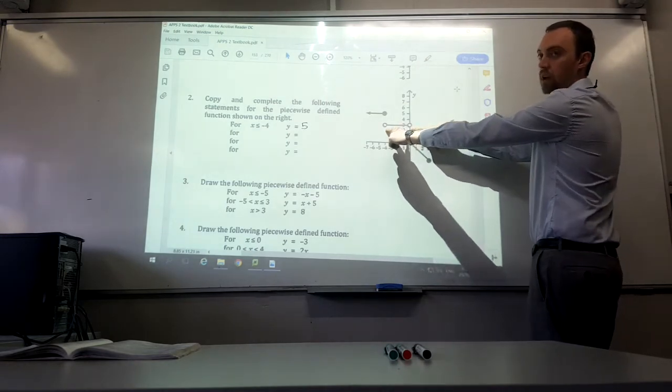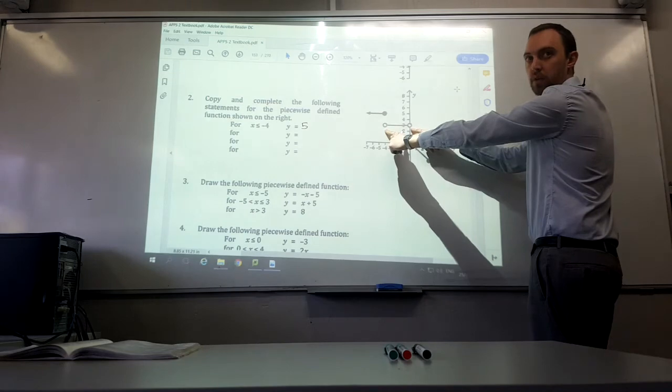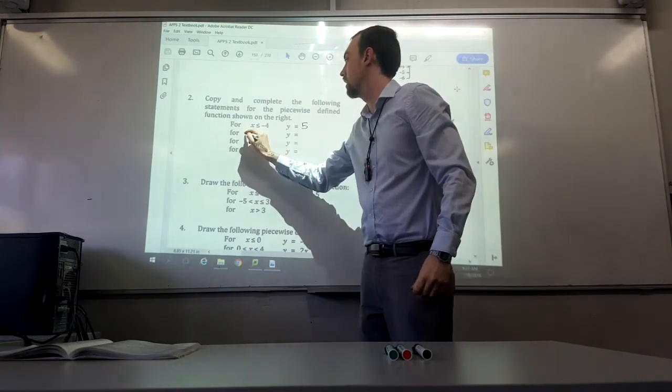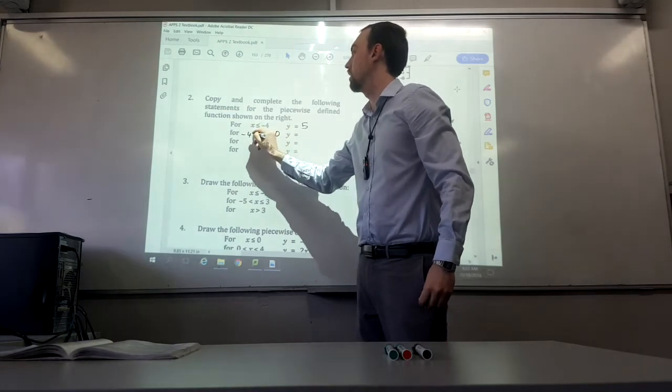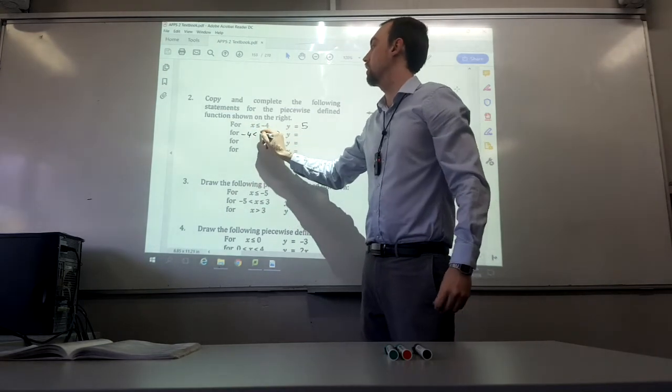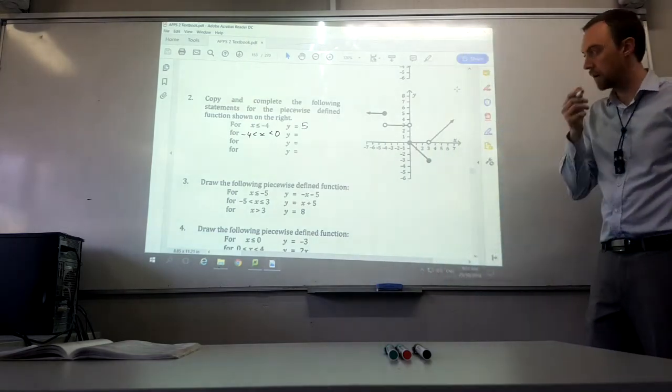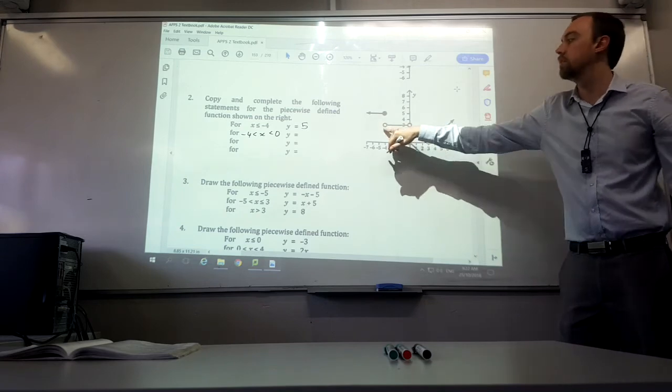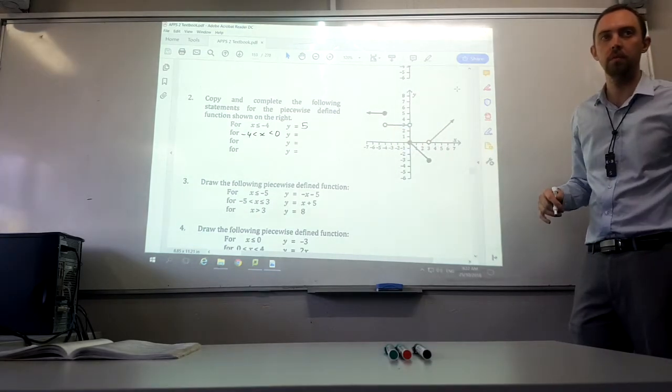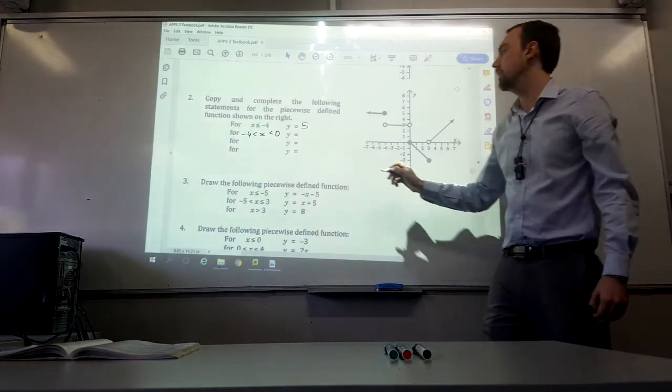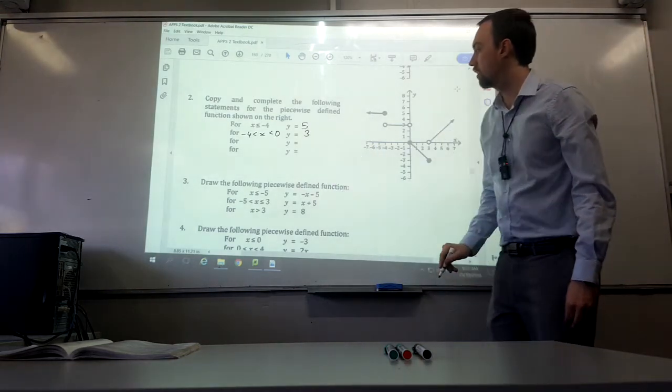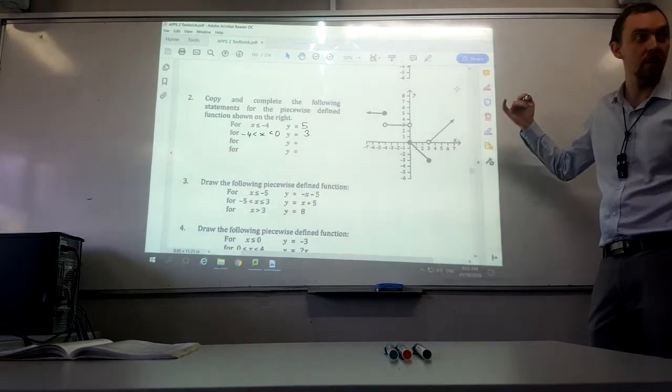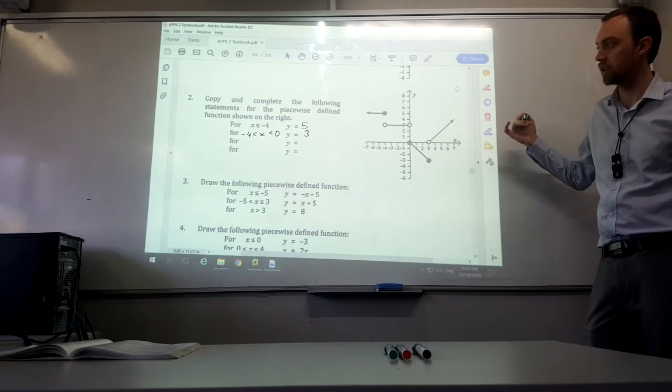Can we think of the equation for a horizontal line or for this horizontal line? y is equal to 5. And we're done. So what are we looking at next? We've got this line here that goes between negative 4 and 0.